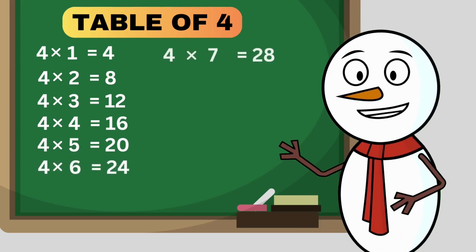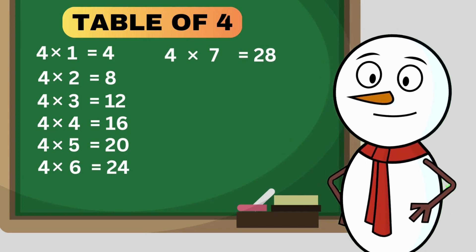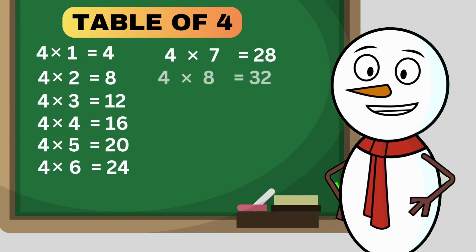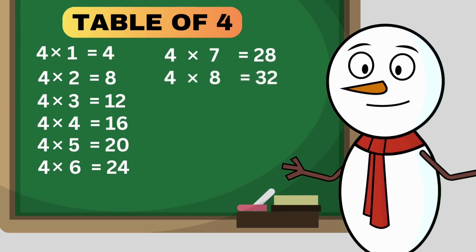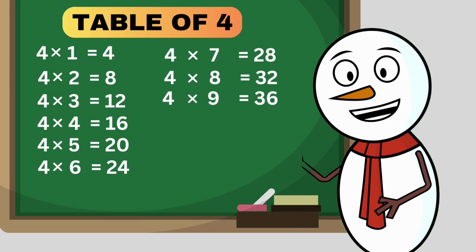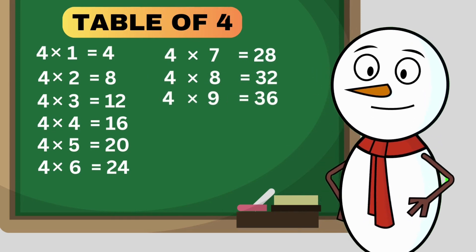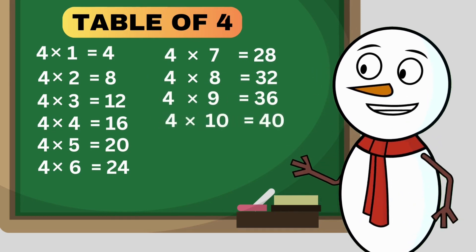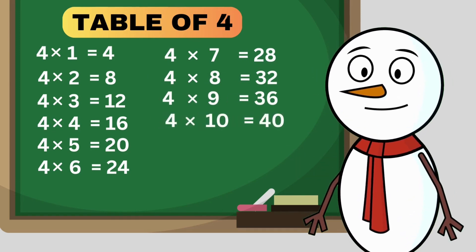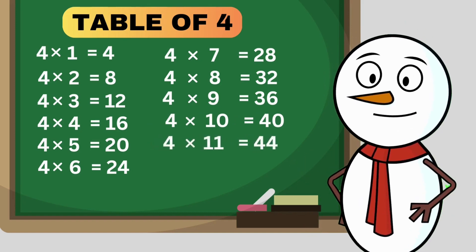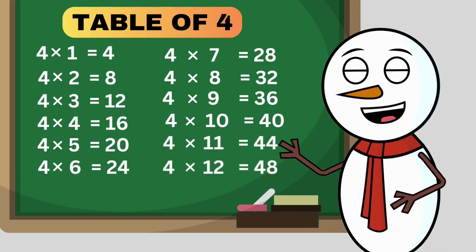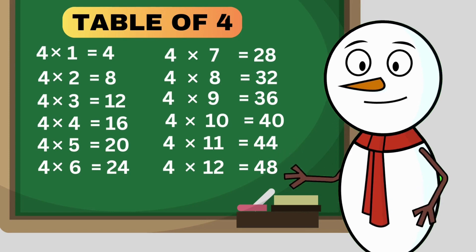4 times 7 is 28. 4 times 8 is 32. 4 times 9 is 36. 4 times 10 is 40. 4 times 11 is 44. 4 times 12 is 48.